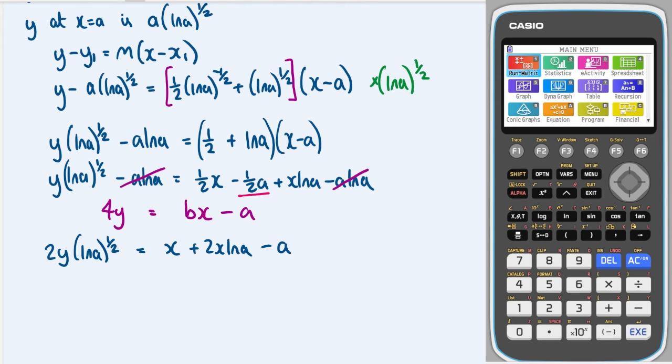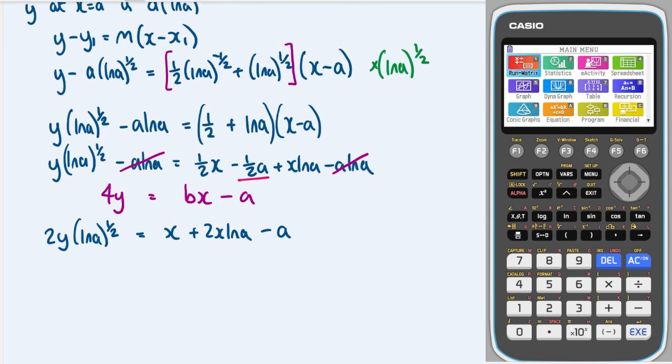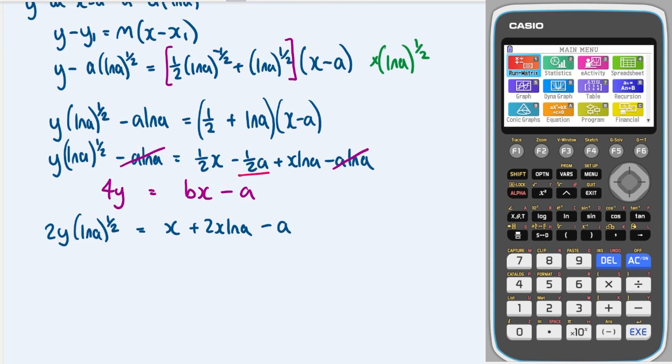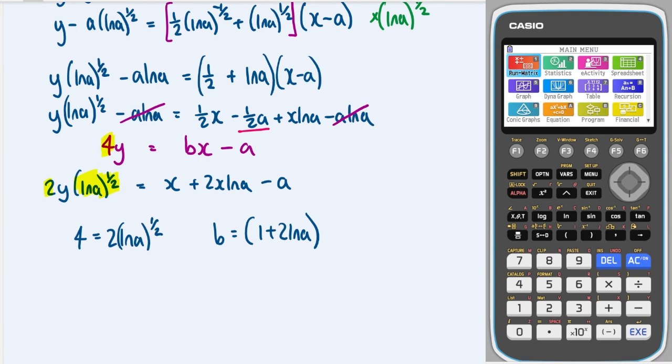So now we're getting very close to being able to compare coefficients. In fact we can now compare coefficients. So if we look at what's multiplied by the y, we've got a 2 and we've got a (ln a) to the half. So therefore 4 must equal 2(ln a) to the half like that. And then if we look at the b as well we'll have b must be equal to in brackets if I take out an x, 1 plus 2 ln a.